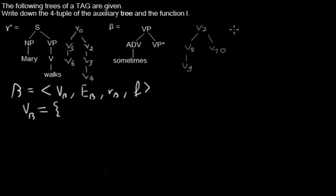In this case I just write down all the nodes that are belonging, that are the real node names of the nodes in this tree. So it's V_7, V_8, V_9, and V_10.